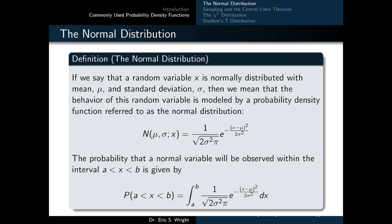If we say that a random variable is normally distributed with a mean mu and a standard deviation sigma, then we mean that the behavior of this random variable is modeled by a probability density function referred to as the normal distribution. This normal distribution's probability density function depends parametrically upon the mean and standard deviation mu and sigma parameters, as well as directly upon the random variable x. The probability that a normal variable will be observed within the interval of x greater than a and less than b is just given by the definite integral of the normal distribution probability density function over that same interval.